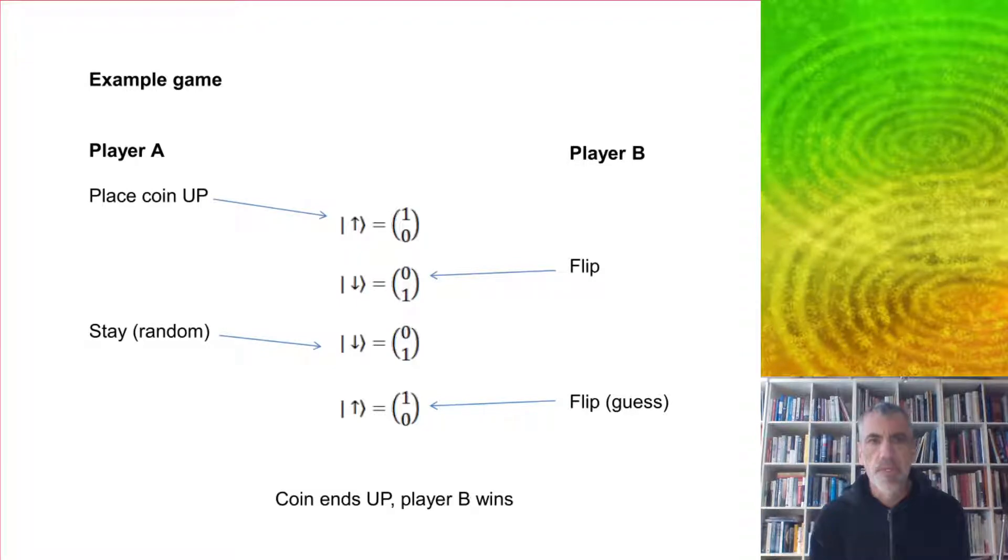As an example, player A's first move, as always, is to put the coin in the up position. Player B then gets a choice, so let's say that they decide to flip the coin, and then player A decides to stay, so just plays the identity, so nothing changes. And then player B basically has to guess. They knew what the state was at this point, and the next move they don't know what's happened, so they have to guess. So let's say that they guess and decide to flip, and it ends heads up, so the coin ends up and player B wins.